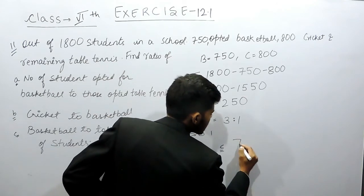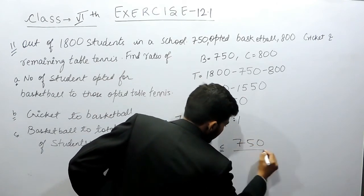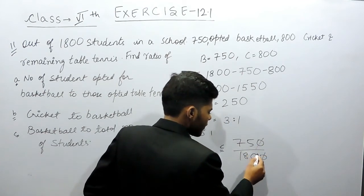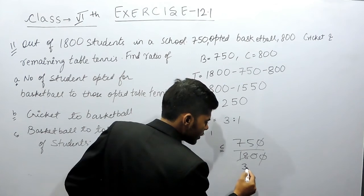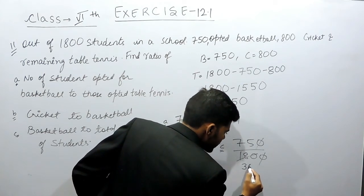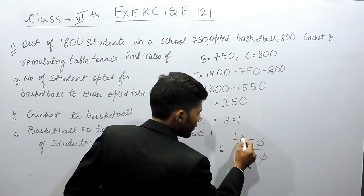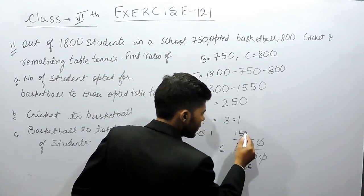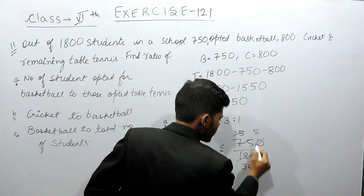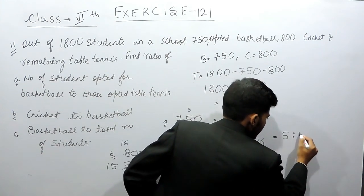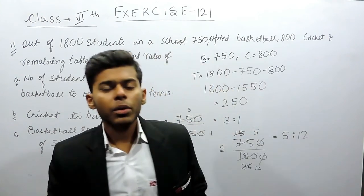And in part C, it will be equals to basketball to total number of students, so 750 upon 1800. This gets cancelled out: 5 times and 12 times. So this will be equals to 5 ratio 12.